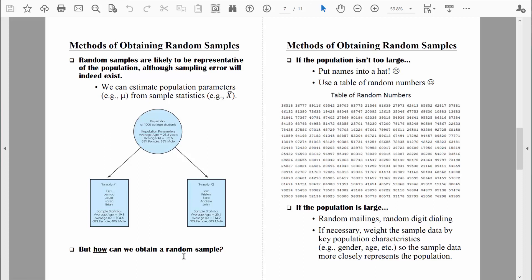In other words, what are some common methods that we can use to obtain random samples? Let's start by talking about a relatively old school procedure. And these couple procedures that I'm going to talk about next work out relatively well when a population isn't too large.